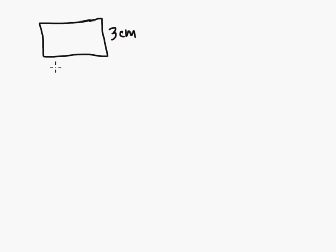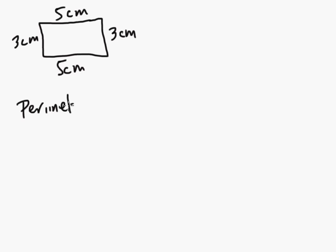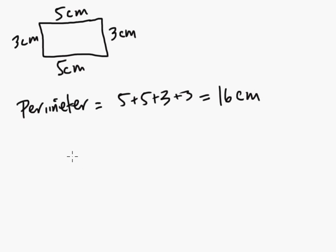If you had a rectangle, say 3 centimeters by 5 centimeters — with a rectangle, the opposite sides are going to be congruent. If you're looking at perimeter, perimeter is just the distance around. You just add up all the sides: 5 plus 5 plus 3 plus 3. You could do 2 times the length plus 2 times the width, but I find this way just as easy — 16 centimeters, pretty simple.